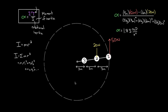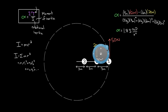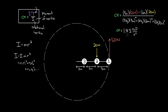So recapping: just like Newton's second law relates forces to acceleration, this angular version of Newton's second law relates torques to angular acceleration. On the bottom of this denominator isn't the mass — it's the rotational inertia that tells you how difficult it's going to be to angularly accelerate an object. You can find the moment of inertia of a point mass as M R squared, and you can find the moment of inertia of a collection of point masses by adding up all the contributions from each individual mass.